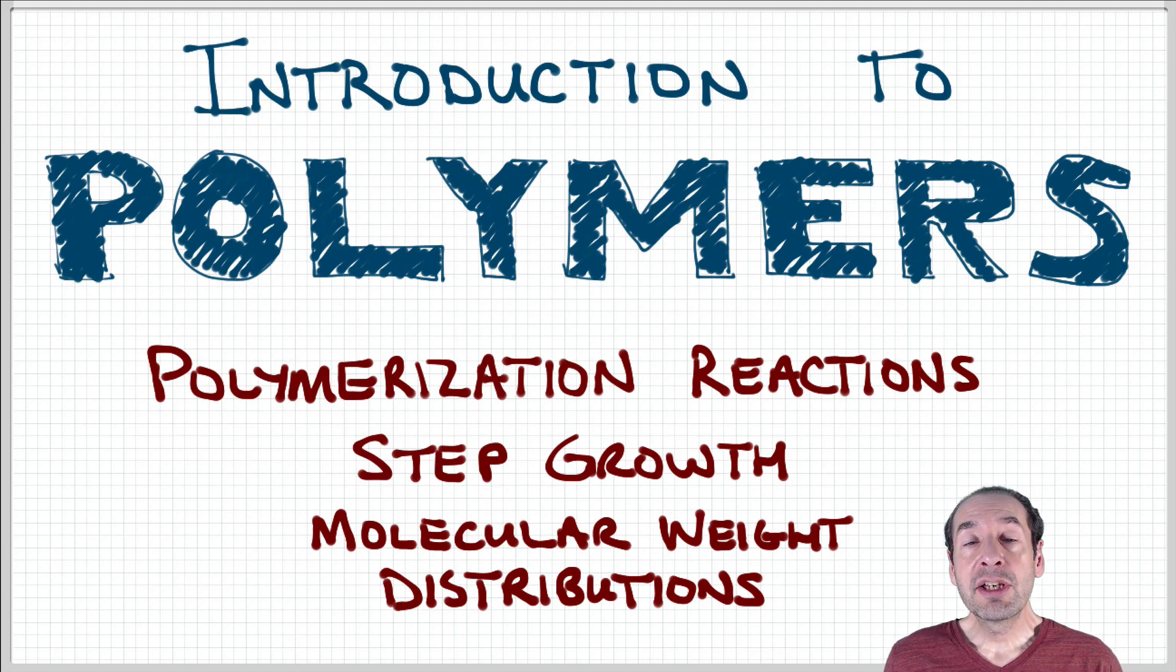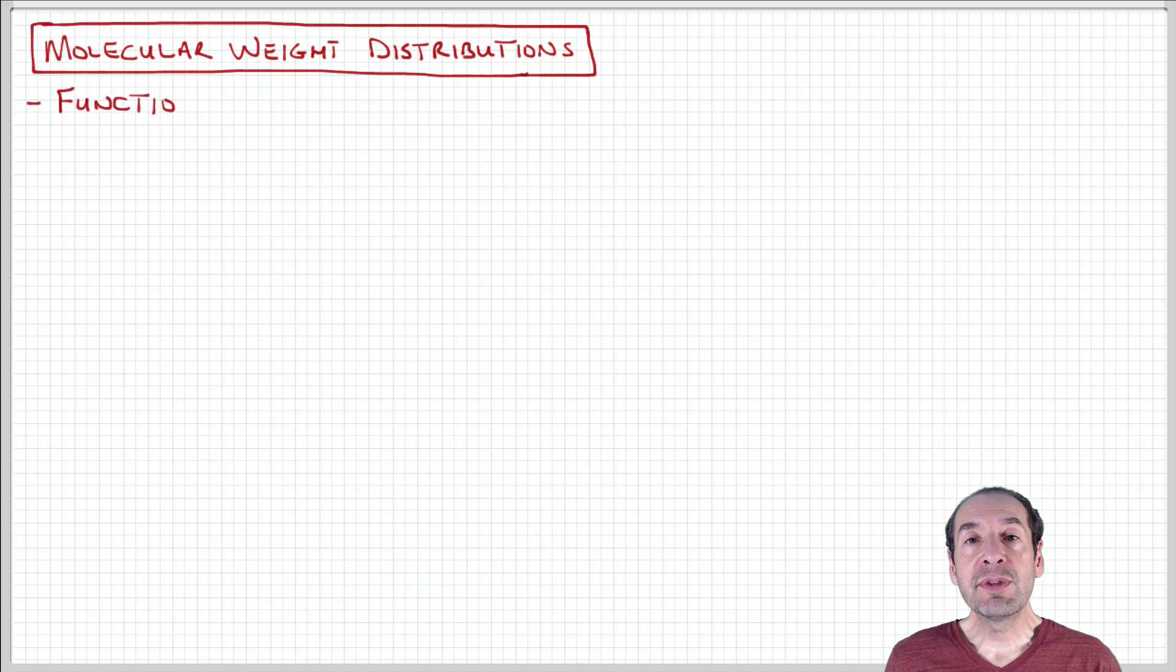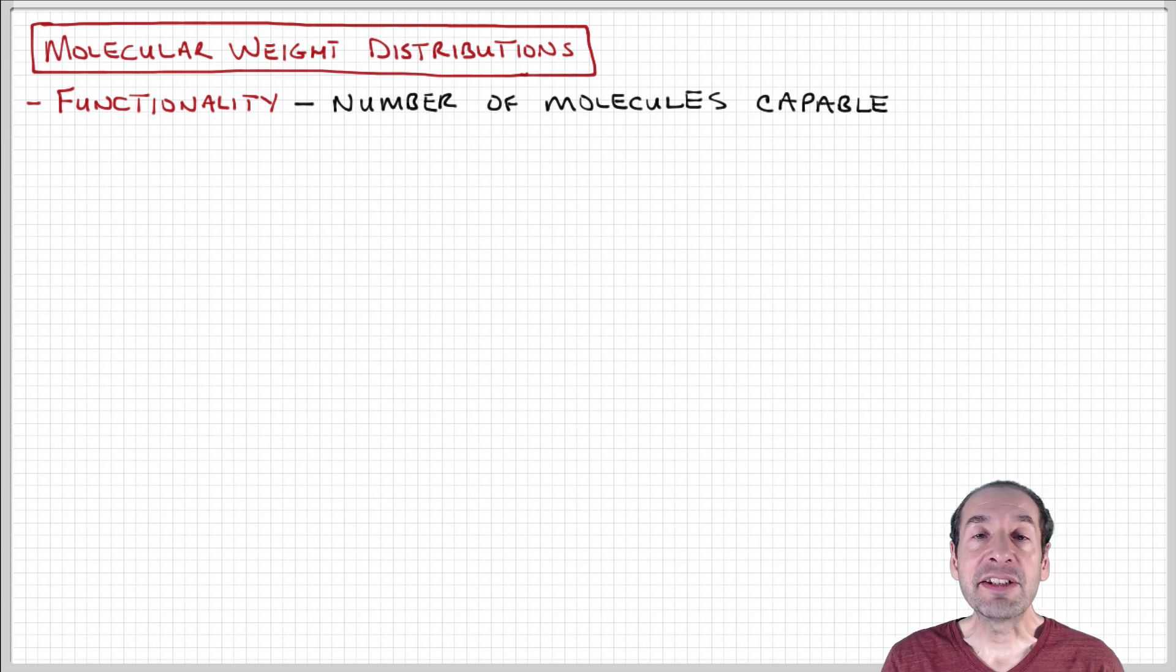Now that we've had an opportunity to look at some familiar polymers that are produced using step growth polymerization, let's go a little bit deeper and see if we can get some insights into the nature of the molecular weight distributions and chain length distributions that are achievable using this polymerization mechanism.